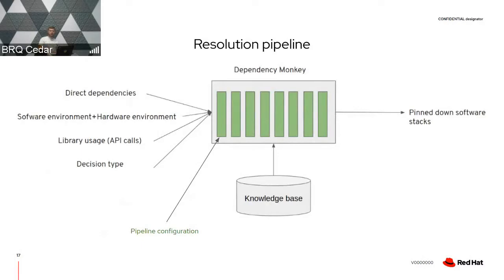If we take a look at Dependency Monkey as a component, we already know the pipeline. The green rectangles are pipeline units grouped into a pipeline configuration. This configuration is used by Dependency Monkey and the Resolver to resolve software stacks respecting Python packaging requirements and to resolve pinned-down software stacks with certain quality. The inputs to Dependency Monkey form a vector: direct dependencies (required — in our case TensorFlow 2.1.0), software environment, hardware environment, what CPU, what operating system — all things we want to consider when running jobs that verify software quality. Another input can be library usage, meaning API calls to different libraries like TensorFlow.